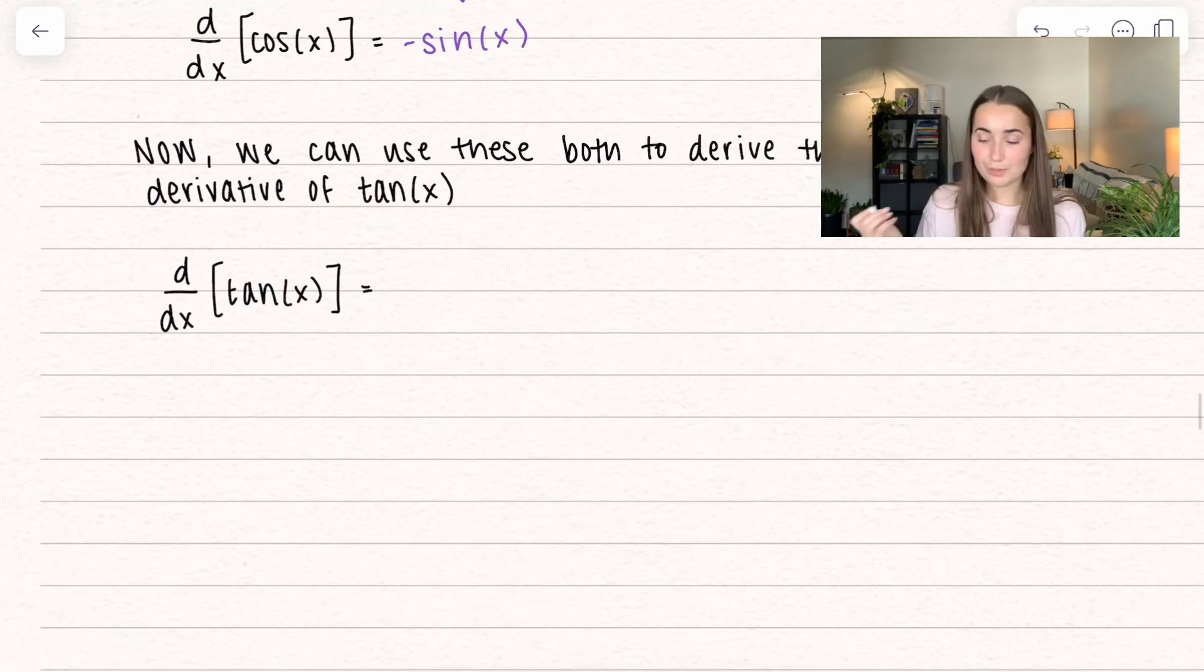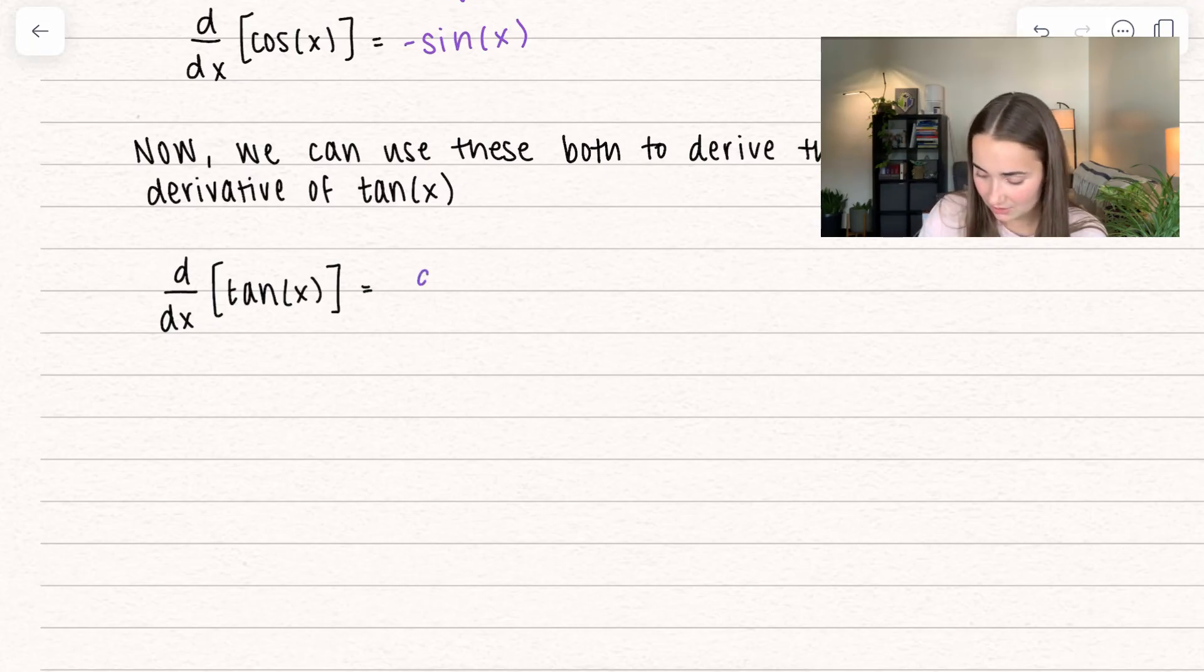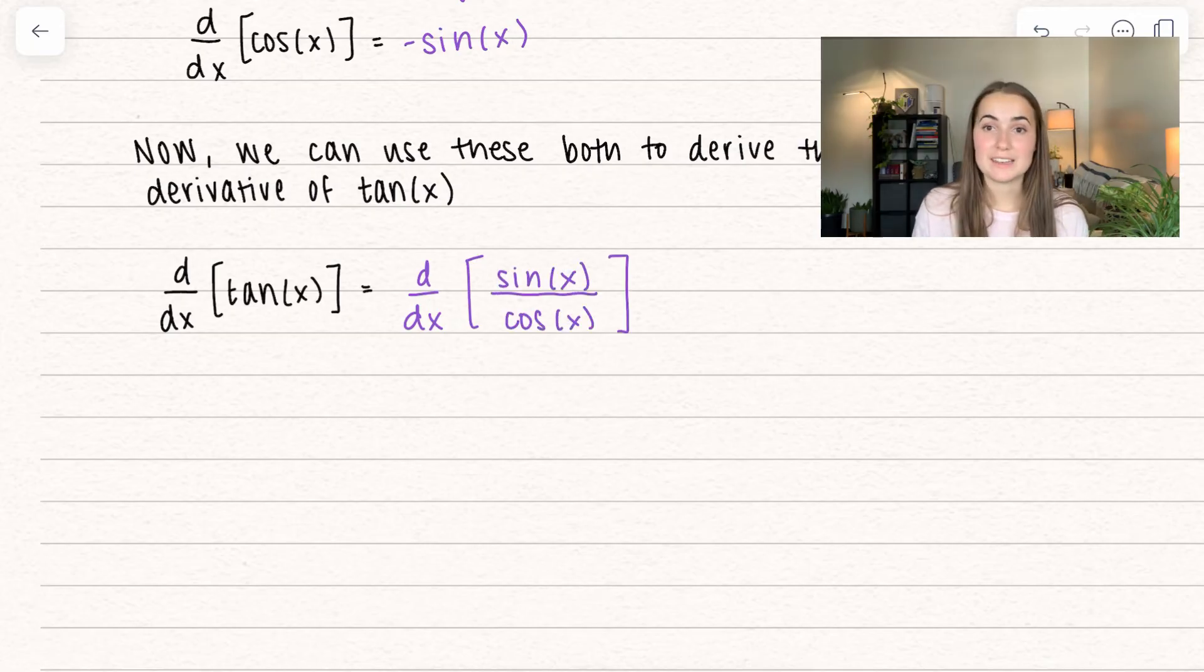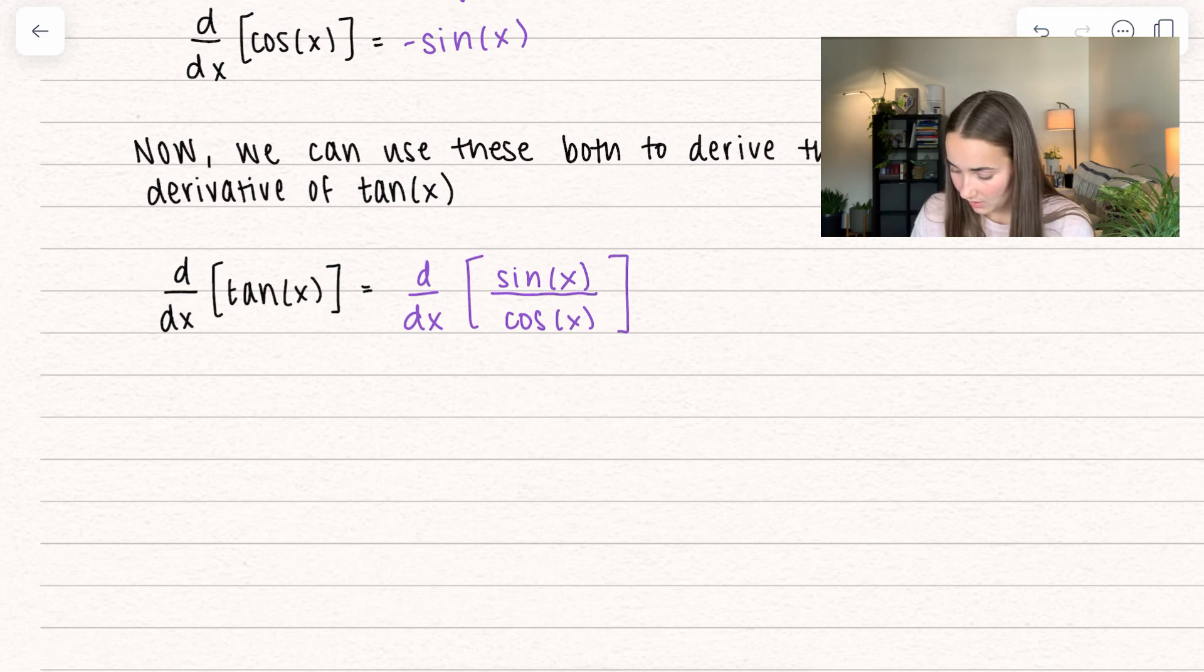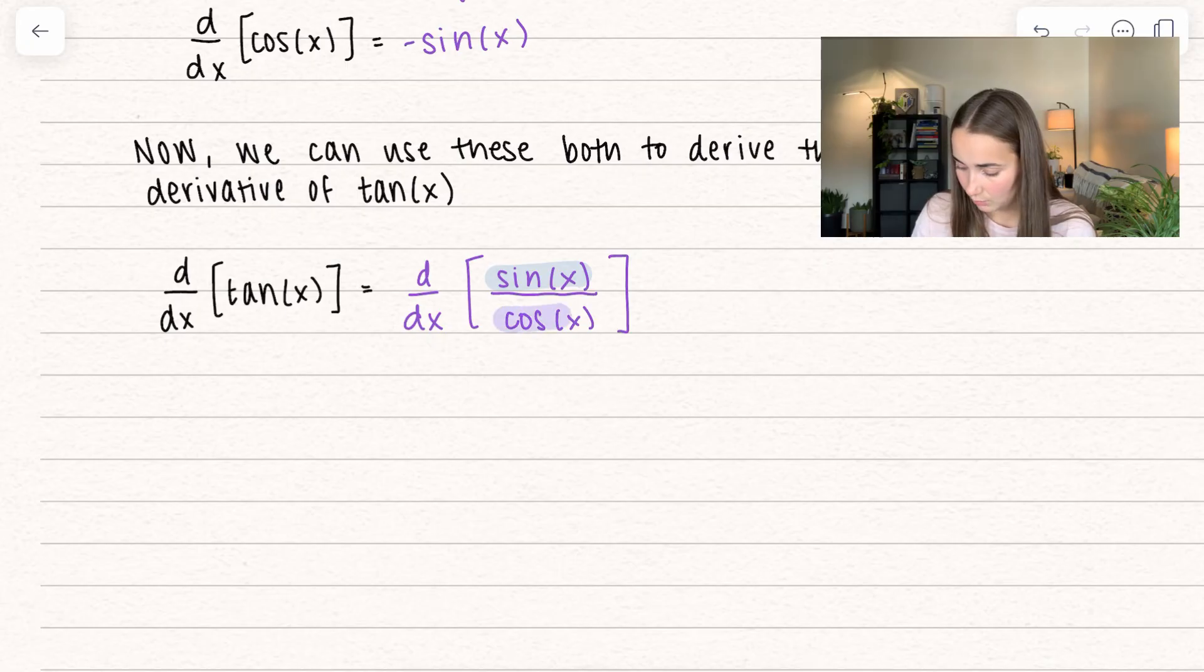We can use both of these now to derive the derivative of tangent of x. I can rewrite tangent of x as sine of x over cosine of x. What I'm going to apply next is the quotient rule. I have my function in the numerator and a function in my denominator.